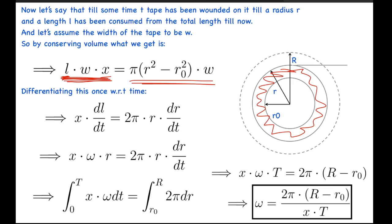This is the volume of the l length when it was in a linear shape. From here, differentiating both sides with respect to time, what we get is x·dl/dt equals 2π·r·dr/dt. We know that dl/dt is nothing but omega times r, the rate of change of the length of the thread which is being wounded on it, which equals omega times the radius at the point at which it is being added. From here, x·omega·r equals 2π·r·dr/dt.